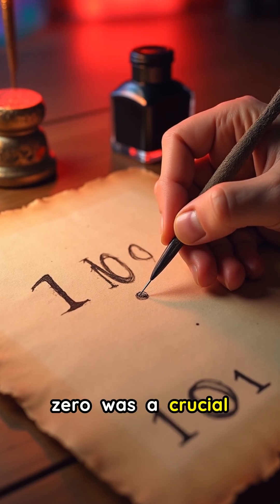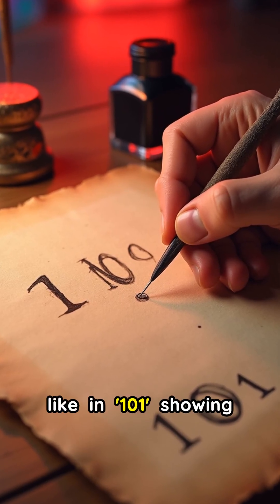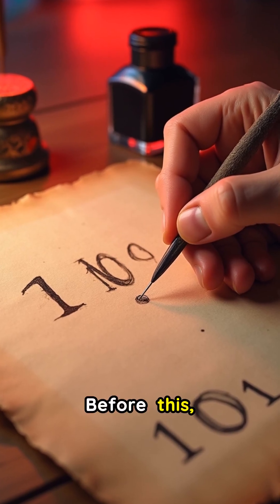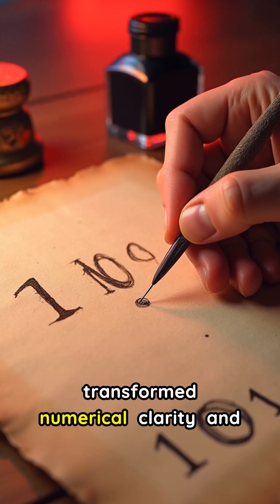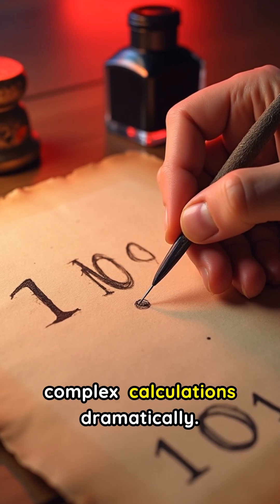Initially, zero was a crucial placeholder, like in 101 feet showing no tens. Before this, distinguishing 1 from 10 was tricky. This simple dot transformed numerical clarity and complex calculations dramatically.